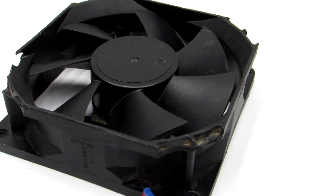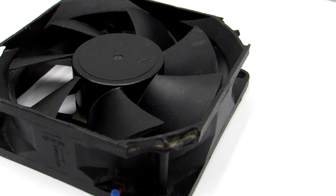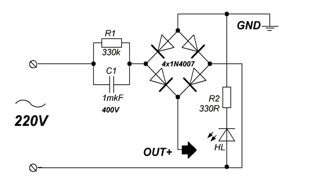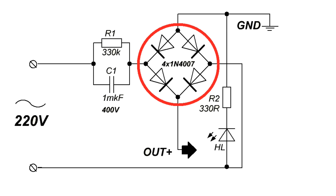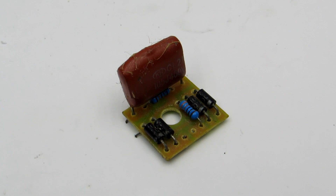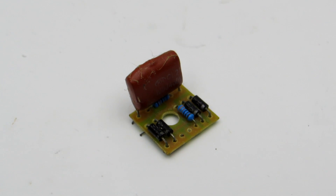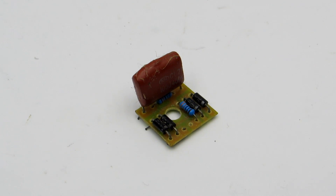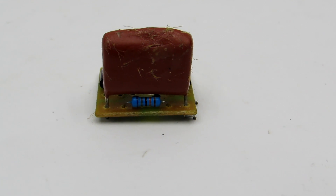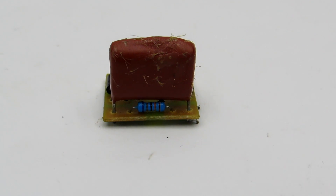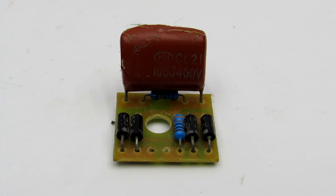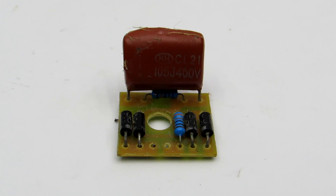To supply the fan, a power supply without transformer is used. It consists of a ballast capacitor and a diode rectifier. The output current depends on the capacitance — approximately 70 mA per 1 µF. The diode rectifier can be assembled from any low-power diodes with a reverse voltage of at least 400 volts. The current rating is not important.